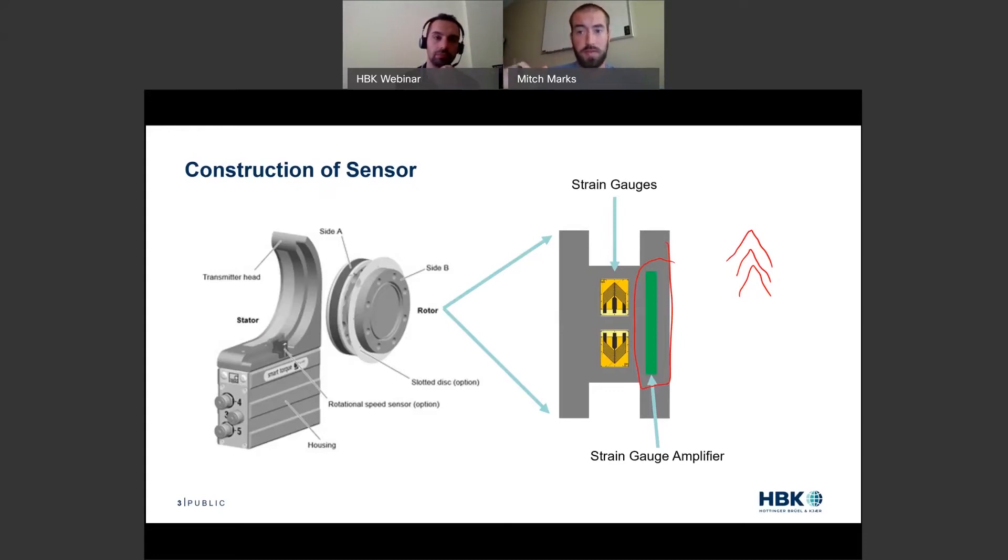We're compensating that out, making sure we have exactly five volts at that gauge. We're taking that millivolt per volt signal, amplifying it, and then digitizing it all on the rotor. It's pretty cool stuff.